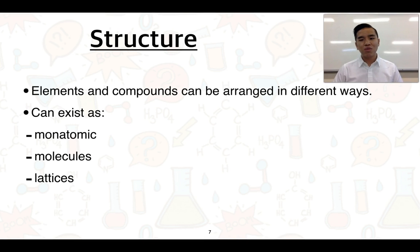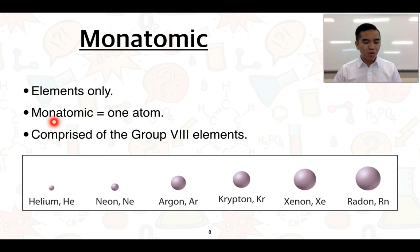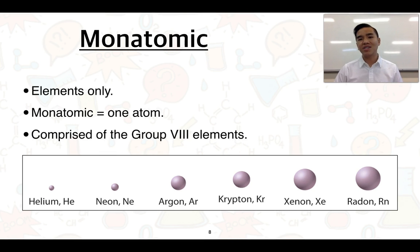Coming back to structure, we can look at the different types of structure that different elements and compounds can take up, and it can fall under one of three categories: they can be monatomic, they can exist as molecules, or lattices. Starting off with monatomic — this does only apply to elements. The word monatomic refers to one atom, with 'mon' or 'mono' meaning one and 'atomic' referring to atom. Only the group 18 noble gas elements seem to exist as monatomic atoms.